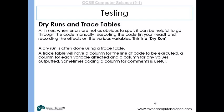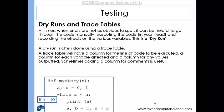So a trace table will have a column for the line of code to be executed, a column for each variable affected, and a column for any values outputted. Sometimes adding a column for the comments is useful. So consider this program here, this function that's going to accept 40 in the parameter n. So 40 is the argument being passed into the function. The first line, a becomes zero and b becomes one. And then we enter a while loop.